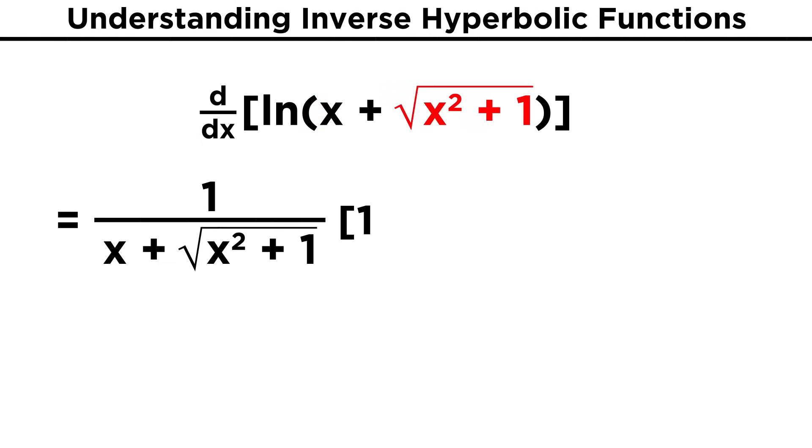And then the radical term requires another chain rule, one half this term to the negative one half times the derivative of what's inside, which is two x, and we get this.